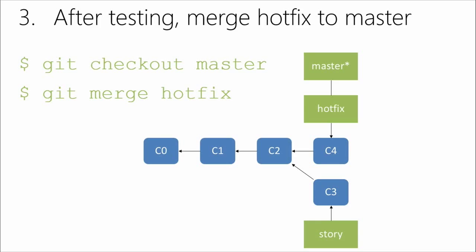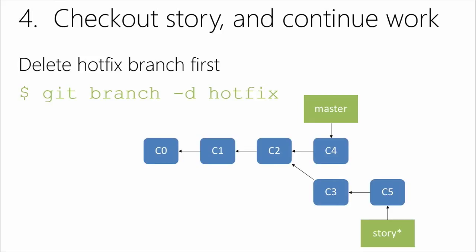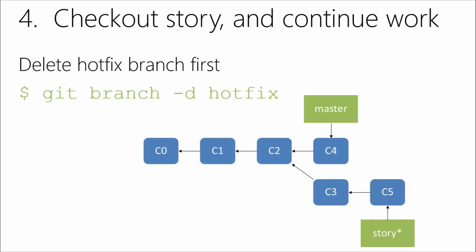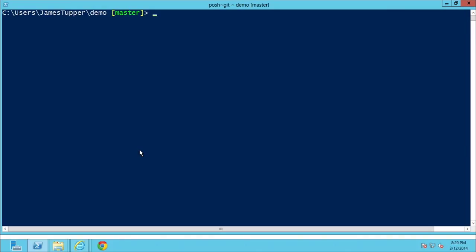Now we're going to see something that's not a fast-forward merge. We delete the hotfix branch with `git branch -d hotfix` — we don't need that anymore. Then we check out story, continue working on it, and then merge back from story into master. We'll see these branchings kind of go together and create a merge commit.